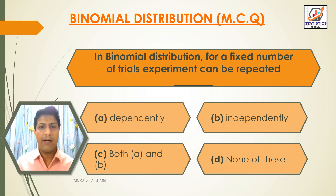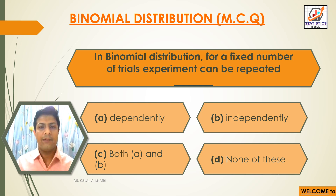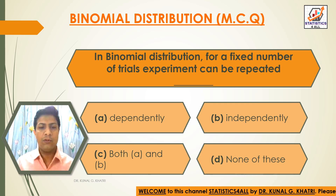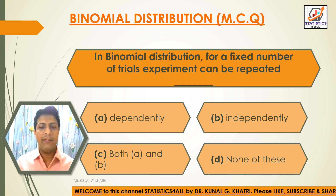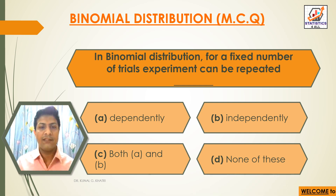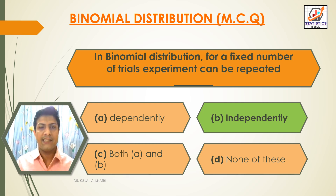Next question: In binomial distribution, for a fixed number of trials, the experiment can be repeated dash. Option A: Independently. Option B: Independently. Option C: Both A and B. Option D: None of these. The answer is option B — Independently. In binomial distribution, for a fixed number of trials, the experiment can be repeated independently.